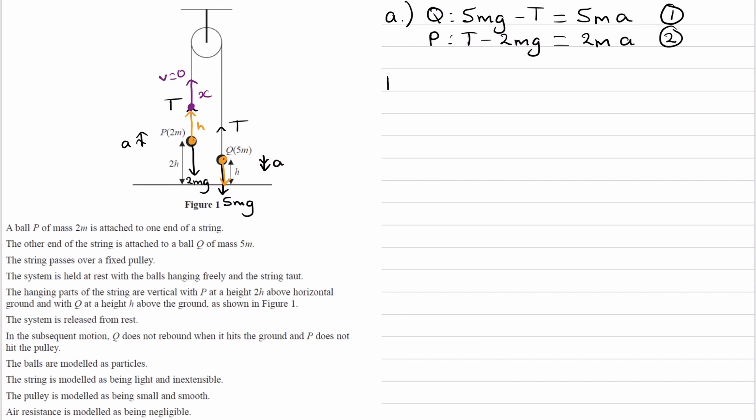So to do that, we have to work out our acceleration. Let's do that from the equations of motion that we have here. So we can add the two things up. If we add the two equations, the minus T and the T cancel. The 5Mg and the minus 2Mg give us 3Mg, and that's equal to 7MA. M's cancel, and we're left with the acceleration is equal to 3G divided by 7.